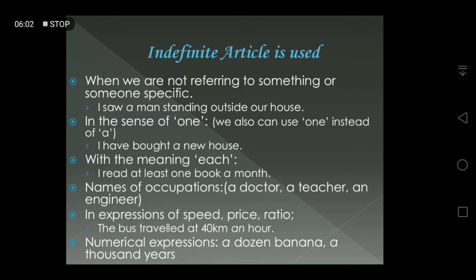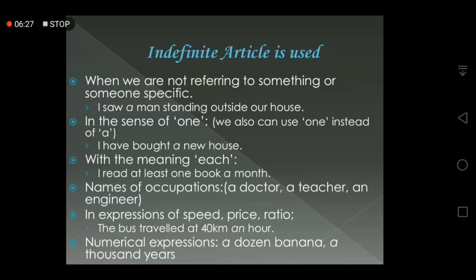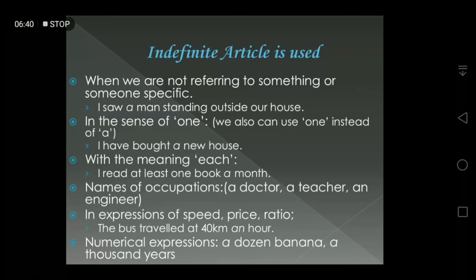Now let's look at the rules for using the indefinite article. First, when we are not referring to something or someone in a specific way — for example: 'I saw a man standing outside our house.' I just saw a man; I am not talking about any particular man. Second, 'a' is used in the sense of 'one' — for example: 'I have bought a new house', meaning I have bought one house.